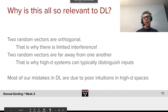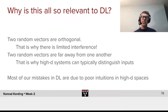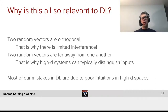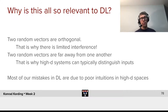Why is this high-dimensional intuition also important for deep learning? Well, two random vectors are orthogonal. That is why there's limited interference — we can learn one thing and at the same time learn another thing, and they, by and large, don't interfere all that much with one another. It might be the reason why really big deep neural networks tend to learn better than smaller ones.